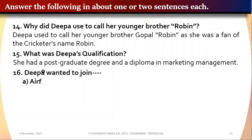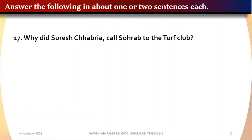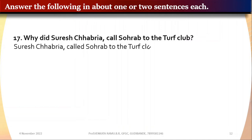Question 16: Deepa wanted to join blank — option A: air force, option B: defense, option C: her father's business, option D: dance classes. The correct answer is her father's business.